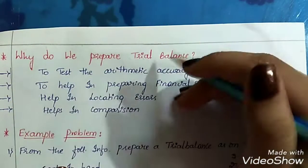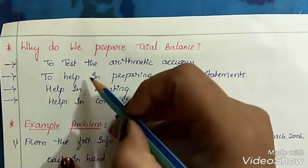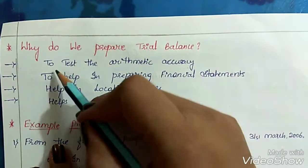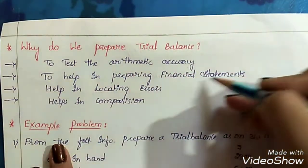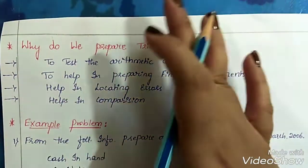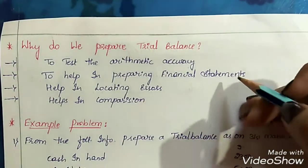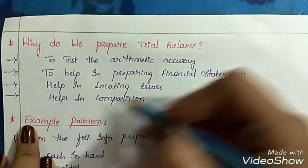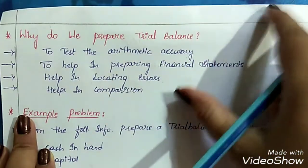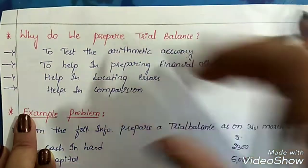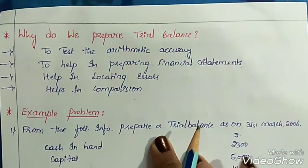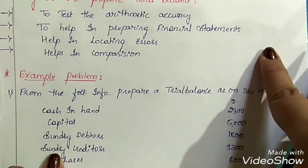The question arises: why do we need to prepare the trial balance? First, to test the arithmetic accuracy — to test whether there are any mistakes in the calculation. Second, to help in preparing financial statements, since trial balance is the first step in preparation of financial statements and serves as a base for them. Third, it helps in locating errors — if the trial balance does not tally, there are certain errors which can be corrected easily. Finally, it helps in comparison of debit and credit balances of the business organization.